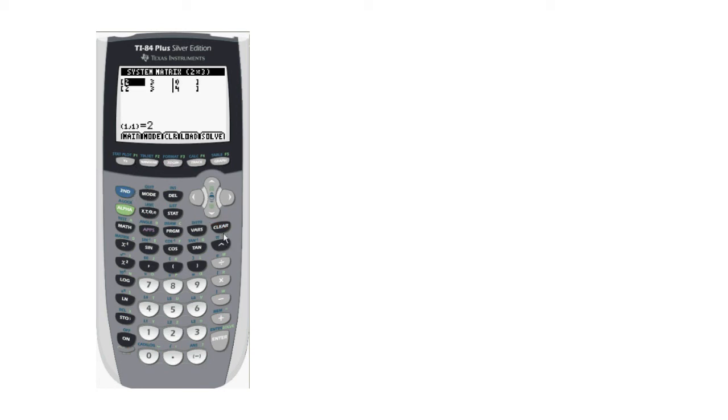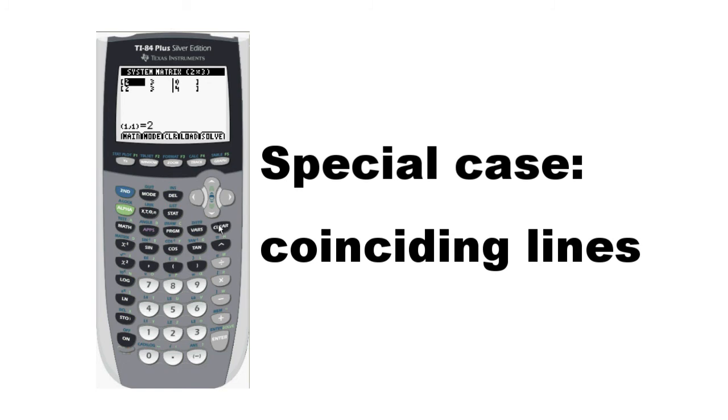In the next case, the lines are coinciding, or overlapping. When that happens, the 84 will solve for X in terms of Y. Take a close look at what this looks like. When you see this type of result, the problem has infinite solutions.